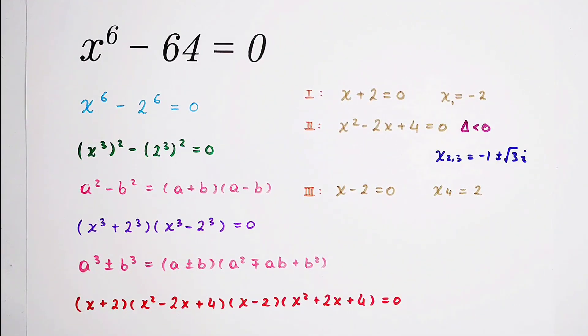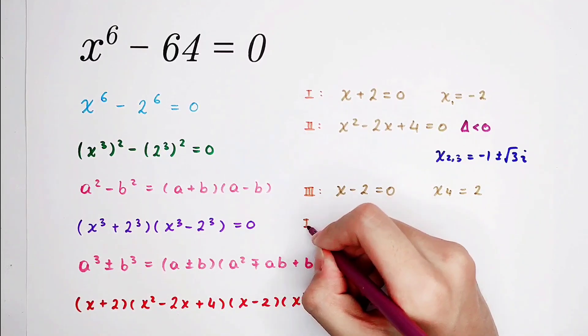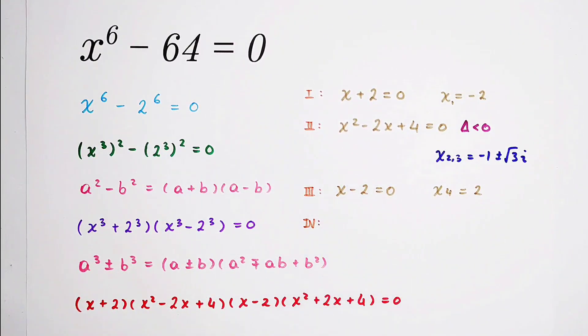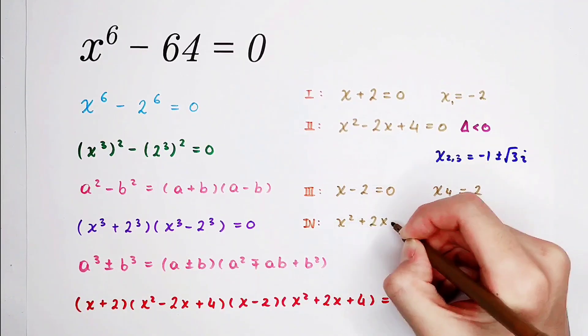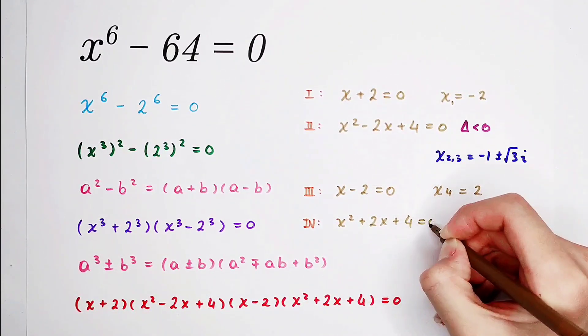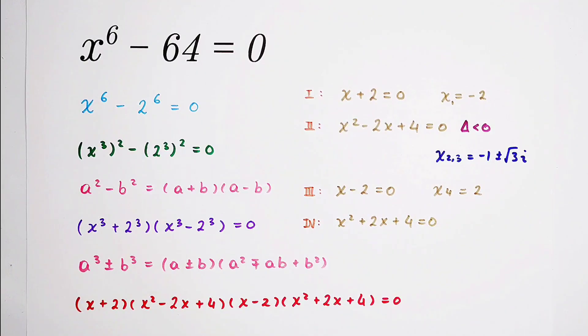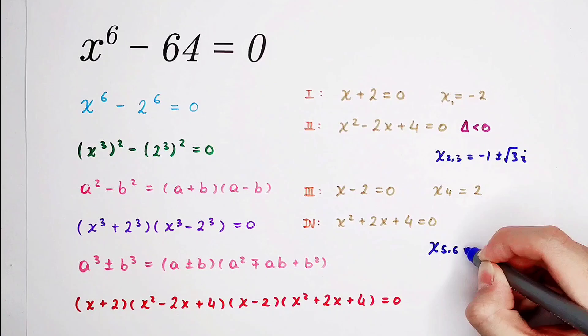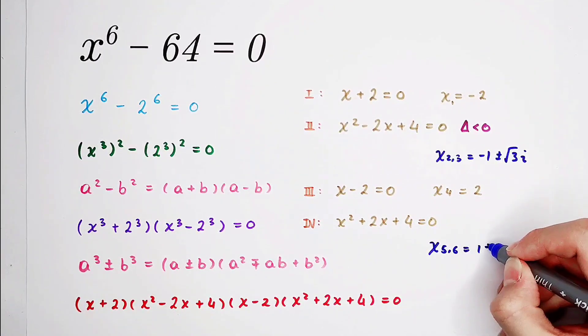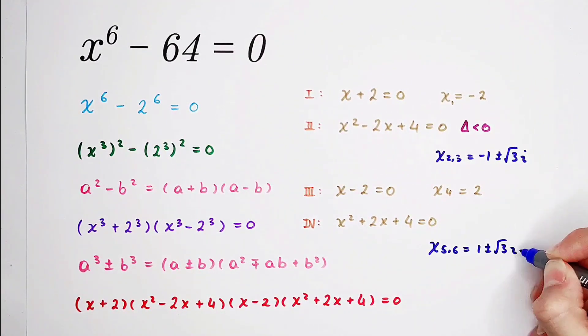And then in our fourth case, x squared plus 2x plus 4 equals 0. We get x5 and 6 are 1 plus or minus square root of 3 times i.